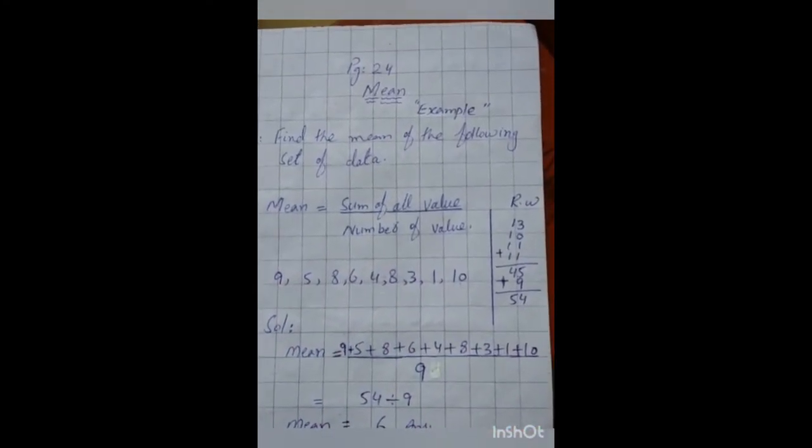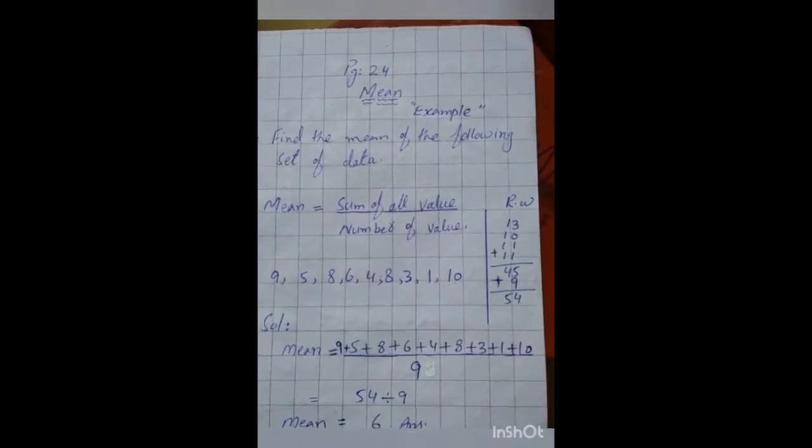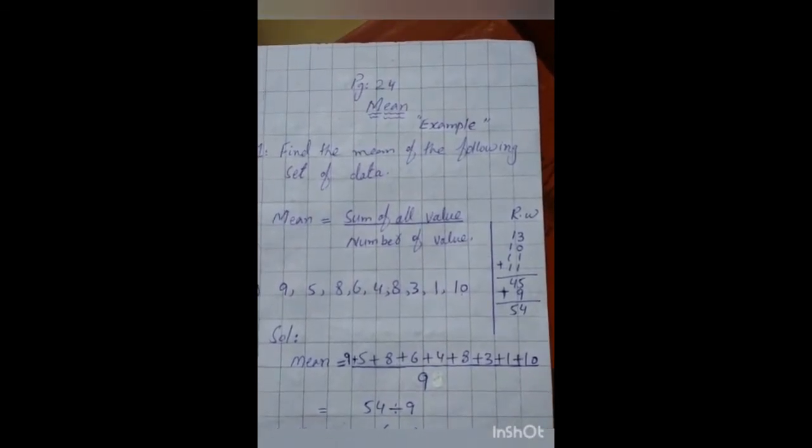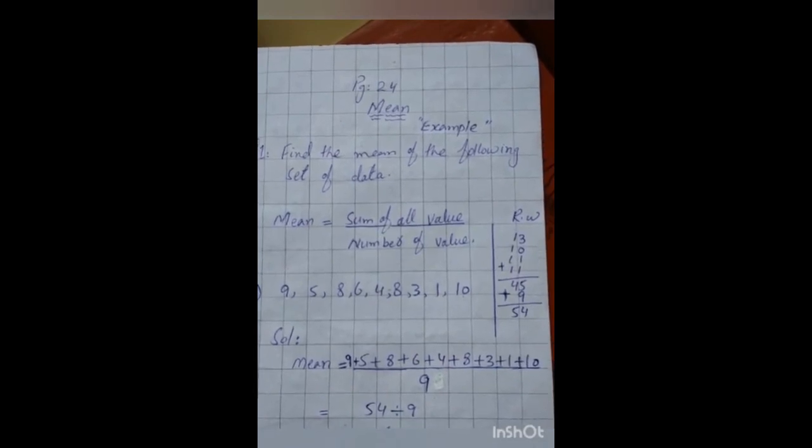54 divided by 9 is 6. Means the mean of this number is 6. Now, solve this exercise with the help of this video. All questions will be done in your copy. Alla apaiz.